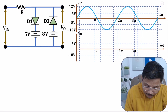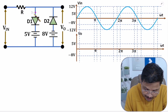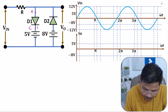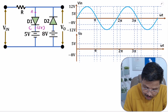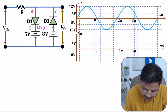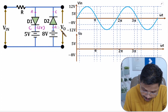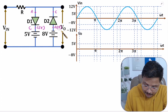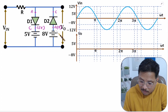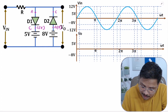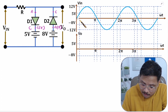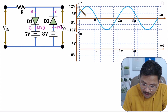D1 has its anode here and cathode here; the cathode is having plus 5V. D2 has its cathode here and anode here; the anode is having minus 8V. Now let us understand how things will work during the positive half cycle of V_in.